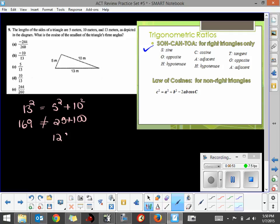That's 125. 125 is not equal to 169, so what I've done is ruled out my ability to use SOHCAHTOA, because it is only available to us when we have right triangles.